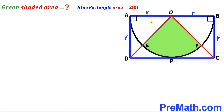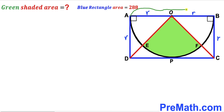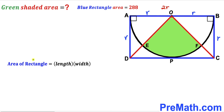Bear in mind that the angles at the corners are 90 degrees since we are dealing with rectangle ABCD. We can observe that the whole side AB of the blue rectangle is going to be r plus r, making it two times r.